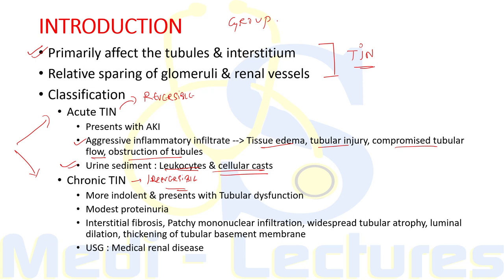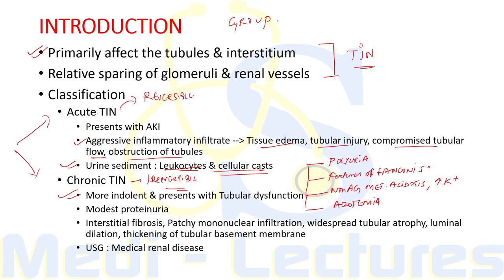Urinary sediment is often active in acute disorders, with leukocytes and cellular casts. The clinical features of chronic TIN are more indolent, usually presenting with tubular dysfunction: polyuria due to nephrogenic diabetes insipidus, features of Fanconi syndrome due to defective proximal tubular reabsorption, non-anion gap metabolic acidosis, hyperkalemia due to impaired ammoniogenesis, progressive azotemia, and modest proteinuria usually less than 2 grams per day.